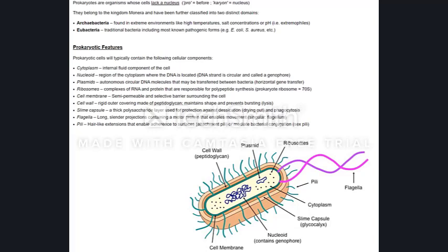They also have a cell wall, which gives them protection from the environment and provides support. It also prevents them from swelling or bursting if they move into an environment that's too extreme — if it's too salty or too dilute.